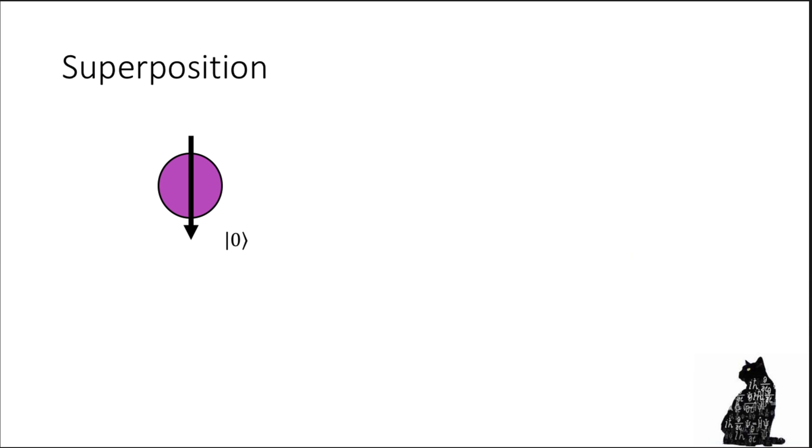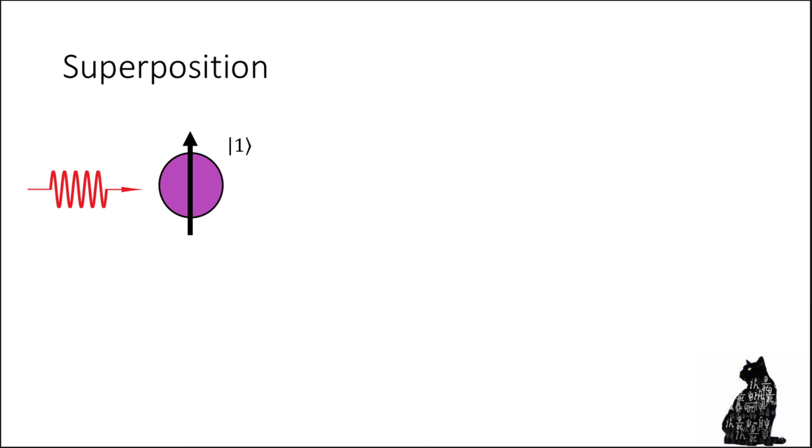Okay, now where does the quantumness come in? Now this is the part where things start to get a little bit strange. So I said on the last slide, I've got an electron, it's in the zero state, I can send in a pulse of light and I can flip it to the one state. Now what happens if I send in a pulse of light that is only half as strong? Does it ignore the pulse? Does it absorb the pulse? Does it go to some weird in-between state? What happens?